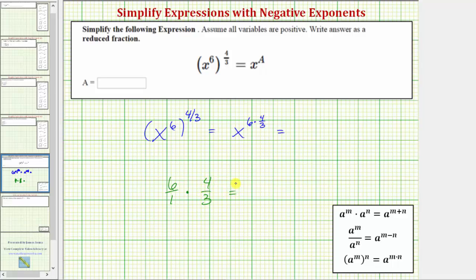Before multiplying, we'll simplify out any common factors between the numerators and denominators. Notice three and six share a common factor of three. There's one three and two threes in six.